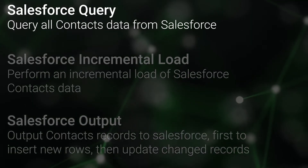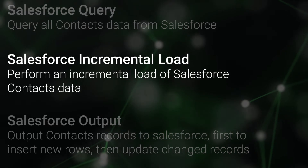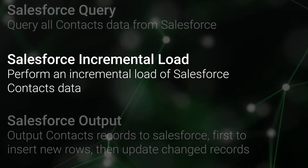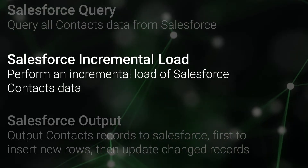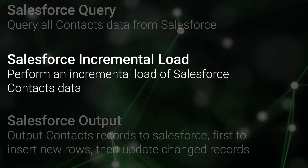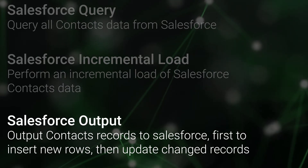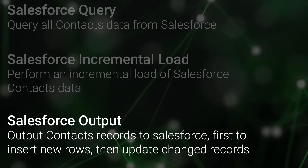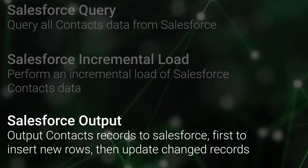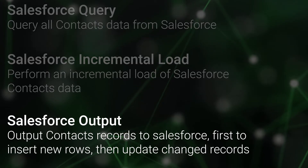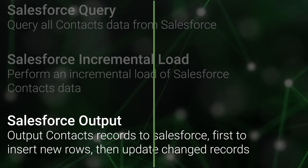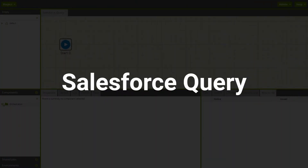We'll query all contacts data to load to a table held on a different database, perform an incremental load of contacts from the Salesforce contacts object to a different database — which will only load new or modified data — and use the Salesforce output component to output records to Salesforce from a third-party database, first inserting new rows and then performing an update to update changed records.